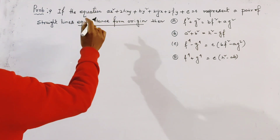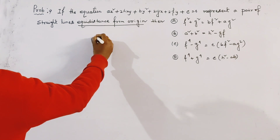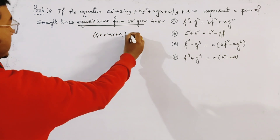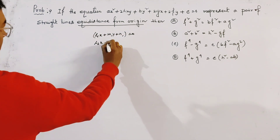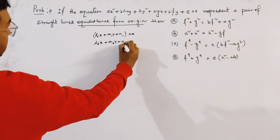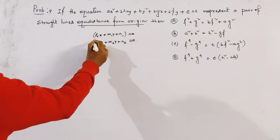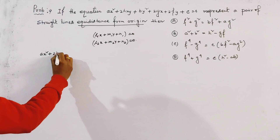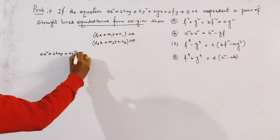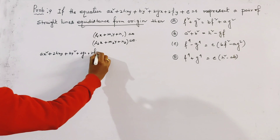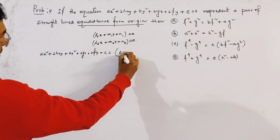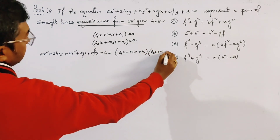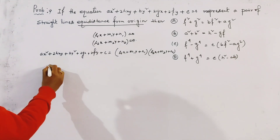Let the two straight lines represented by the given equation be L1x plus M1y plus N1 equals 0, and L2x plus M2y plus N2 equals 0. Now we compare by writing: Ax squared plus 2Hxy plus By squared plus 2Gx plus 2Fy plus C equals (L1x plus M1y plus N1) times (L2x plus M2y plus N2), and comparing the coefficients.